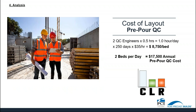Let's look at the cost of layout for pre-pour quality control. Two quality control engineers at half an hour a day equals one hour per day. At 250 days a year at a rate of $35 an hour, it is $8,750 per year per bed. At two beds per day, the annual cost for pre-pour quality control is $17,500. Please note this rate per hour is only applicable to this example — it changes company to company, region to region. So for this purpose, focus on the methodology rather than the specific numbers.